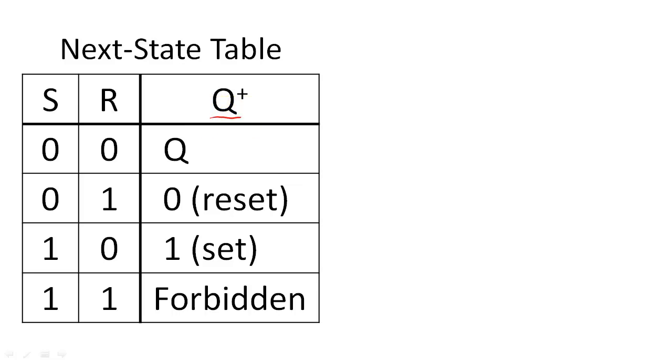Here we see that the first input combination holds the current state into the next state. The second input combination resets the next state to 0, hence why R is 1 for reset. The third input combination sets the next state to 1, hence S is 1 for set. And the final input combination is forbidden.